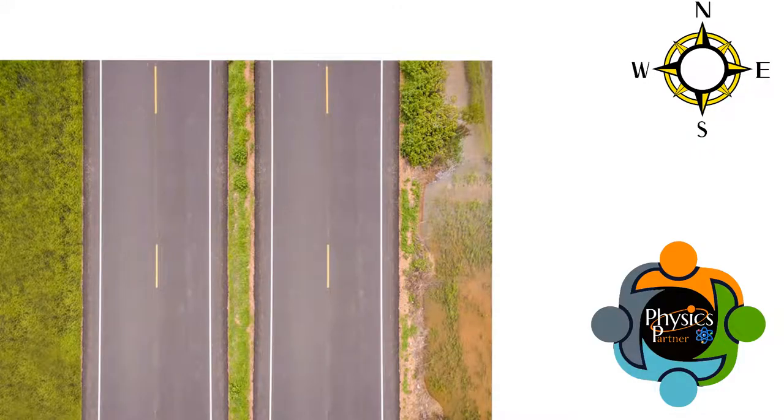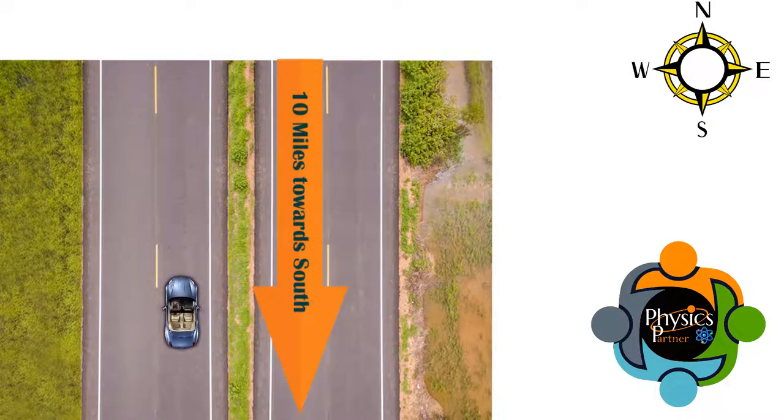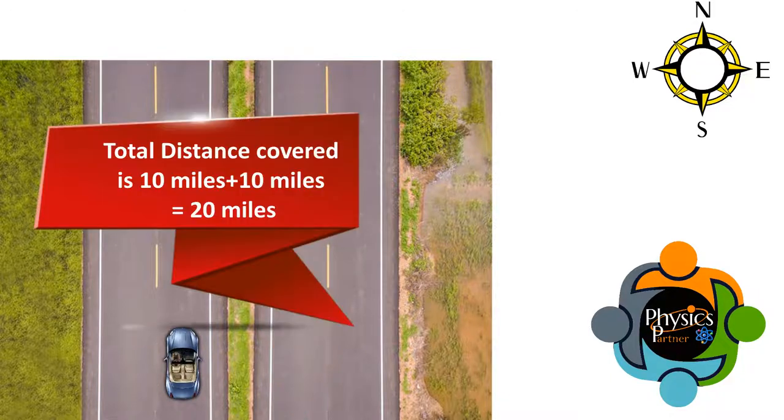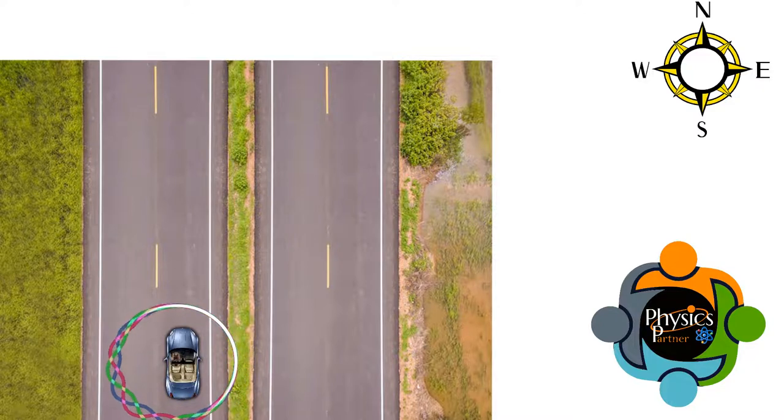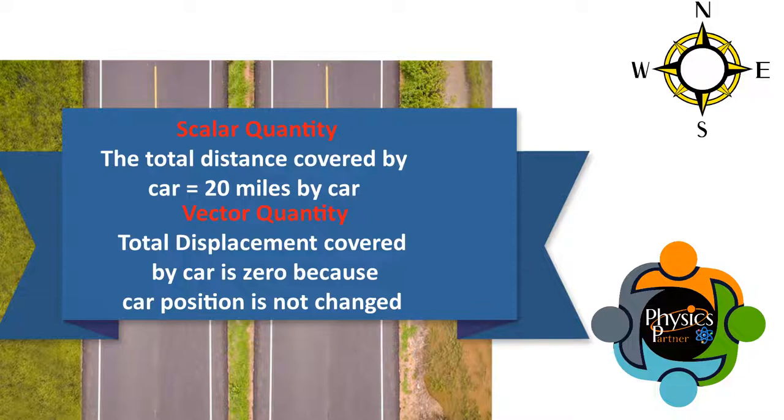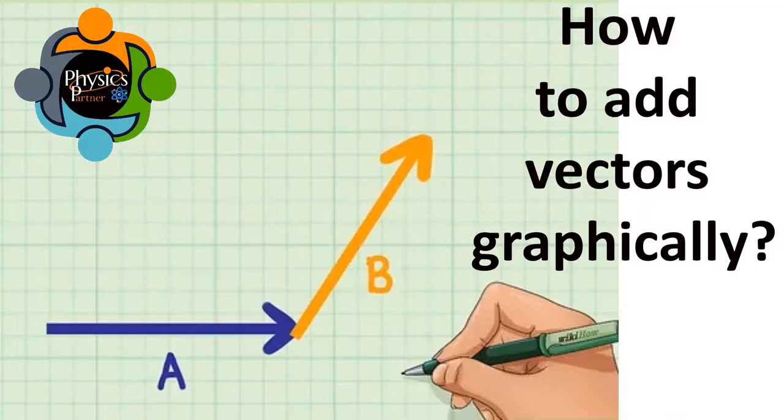To better understand this, let us consider an example of a car which is traveling 10 miles north and 10 miles south. Here the total distance traveled is 20 miles. If you carefully look, the displacement is zero because the car came back to the same position where it started. So the distance traveled is 20 miles, whereas the displacement is zero. The north and south displacements are each vector quantities, and the opposite directions cause the individual displacements to cancel each other out. In this video, let us explore ways to carry out the addition of vectors.